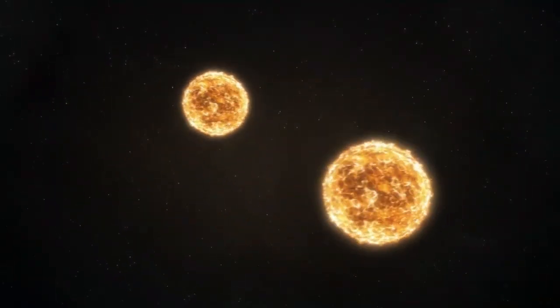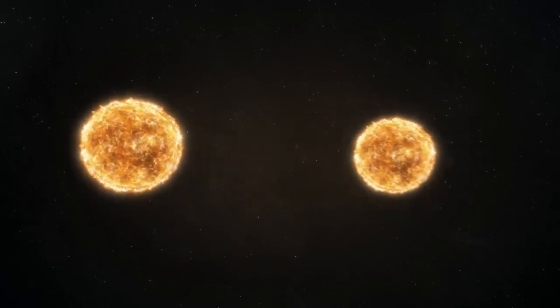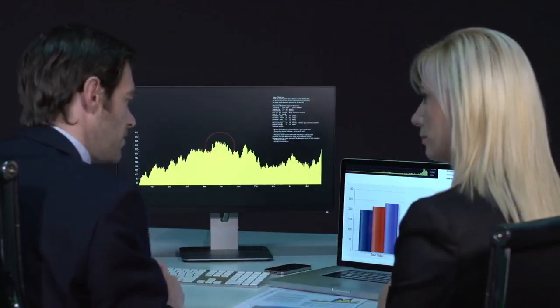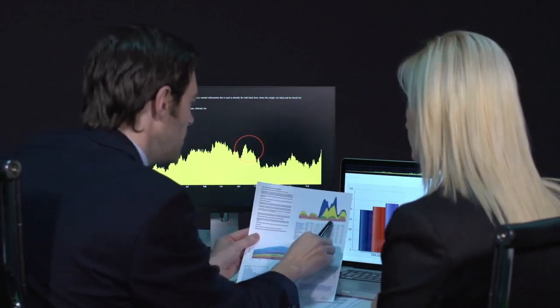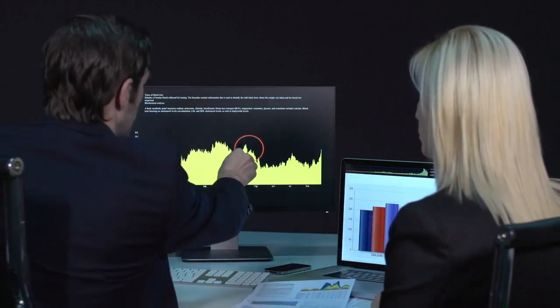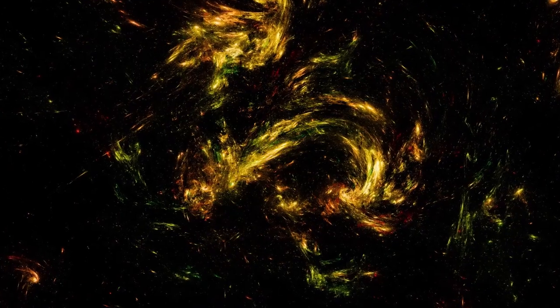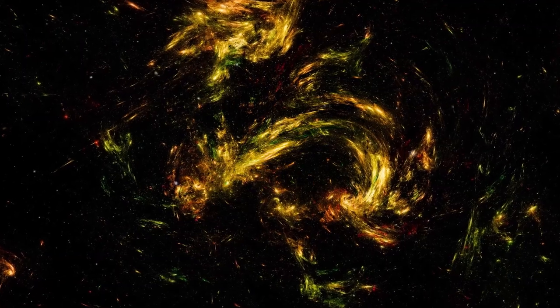These variations, occurring over periods ranging from several dozen to thousands of days, are a consequence of the star's expansion and contraction. Betelgeuse's brightness has been seen to shift significantly from magnitude zero to five, marking it as especially volatile.